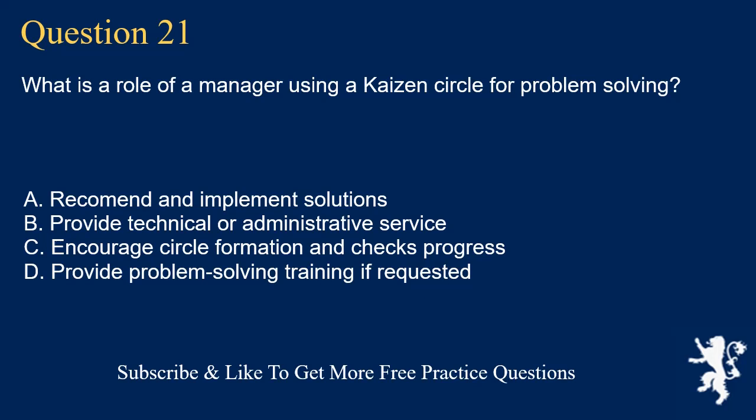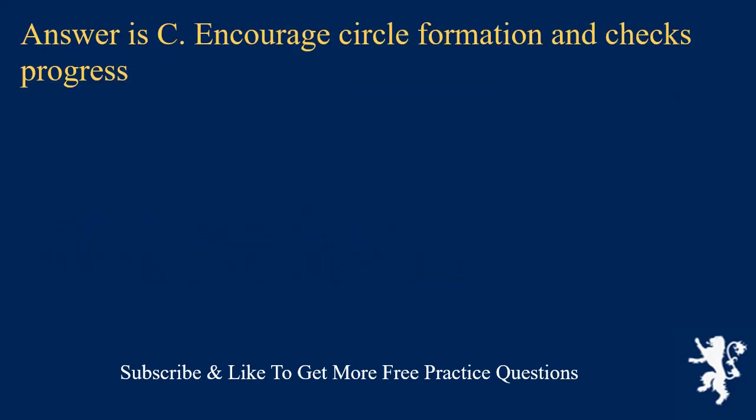Question 21. What is a role of a manager using a Kaizen Circle for problem solving? A. Recommend and implement solutions. B. Provide technical or administrative service. C. Encourage circle formation and check progress. D. Provide problem solving training if requested. Answer is C. Encourage circle formation and check progress.